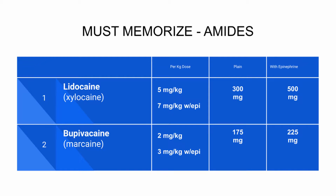In order to answer a toxic dose calculation question, you must memorize that lidocaine has a per kilogram toxic dose of 5 milligrams per kilogram plain, and 7 milligrams per kilogram with epinephrine. Lidocaine plain has a toxic dose max of 300 milligrams, whereas lidocaine with epinephrine has a toxic dose of 500 milligrams. Marcaine has a max dose of 2 milligrams per kilogram, and its max dose is 175 milligrams plain or 225 milligrams with epinephrine.